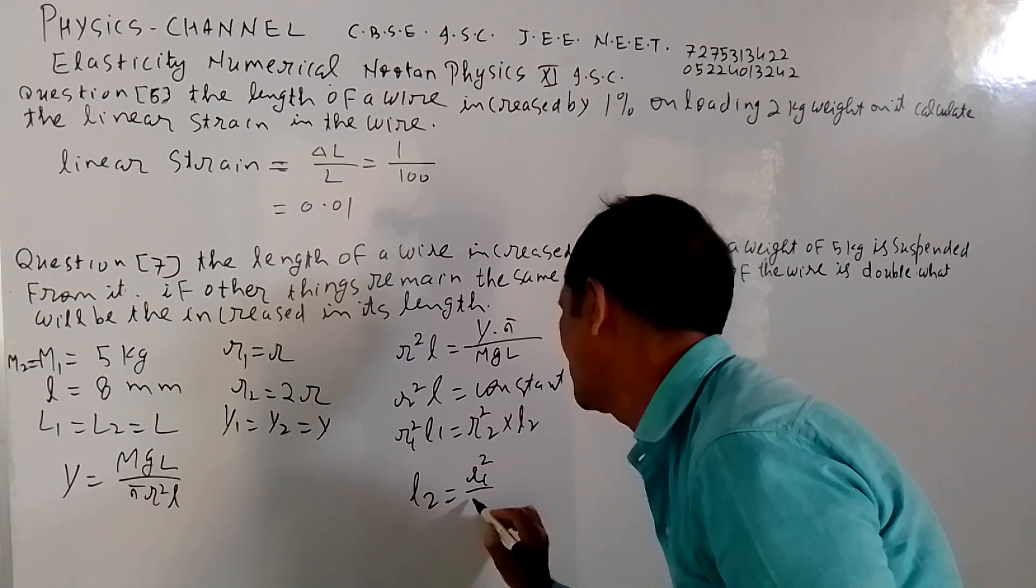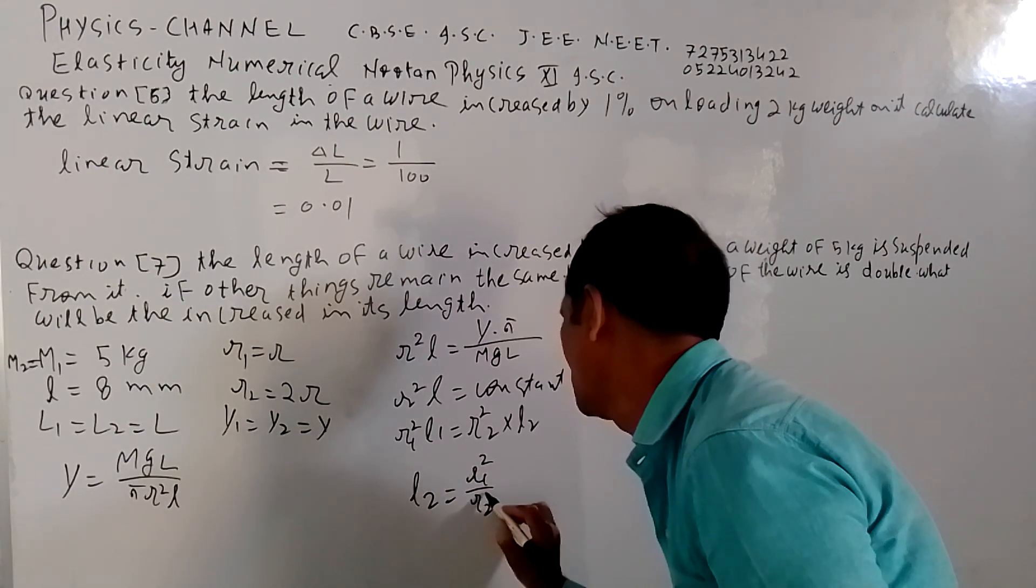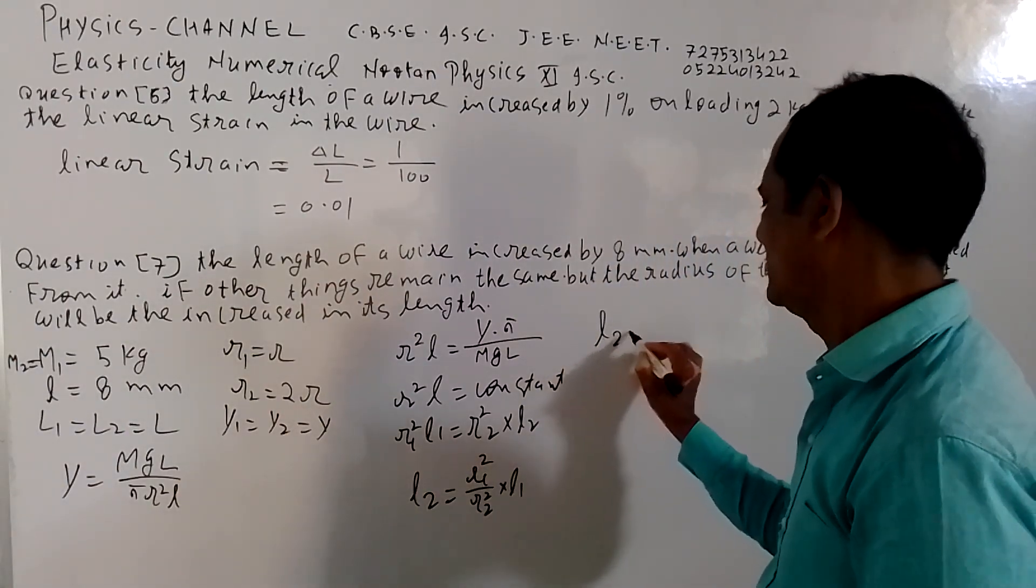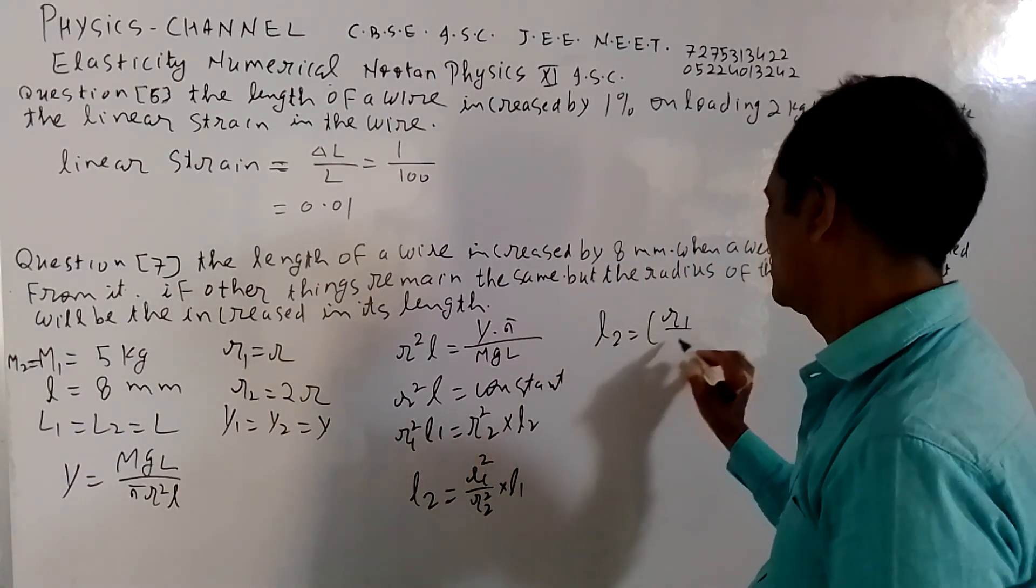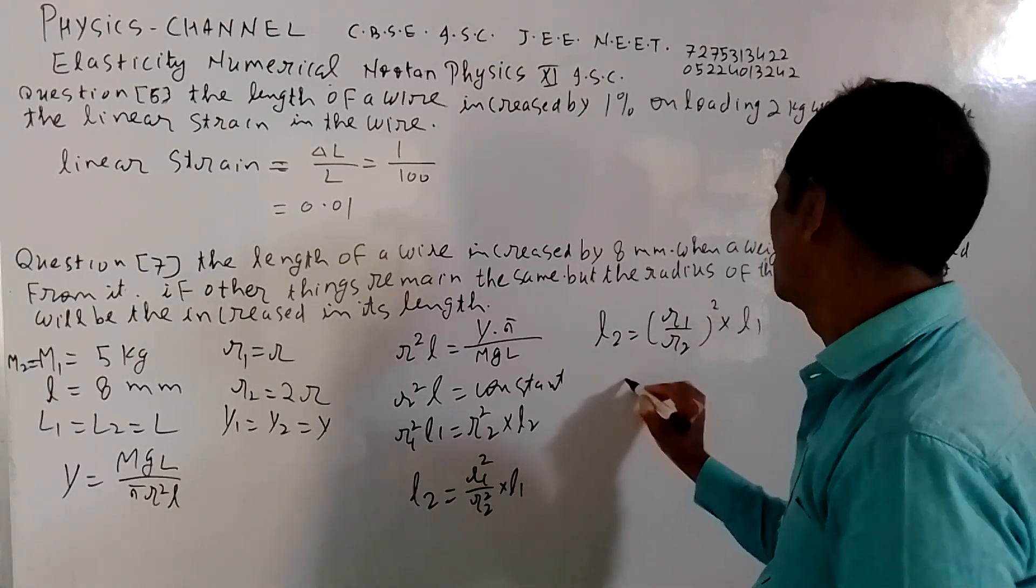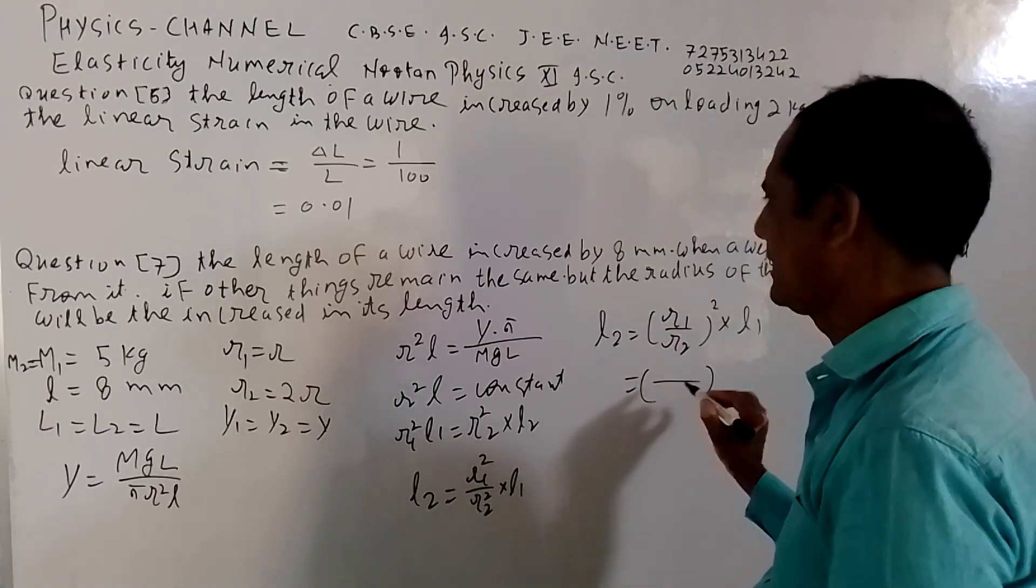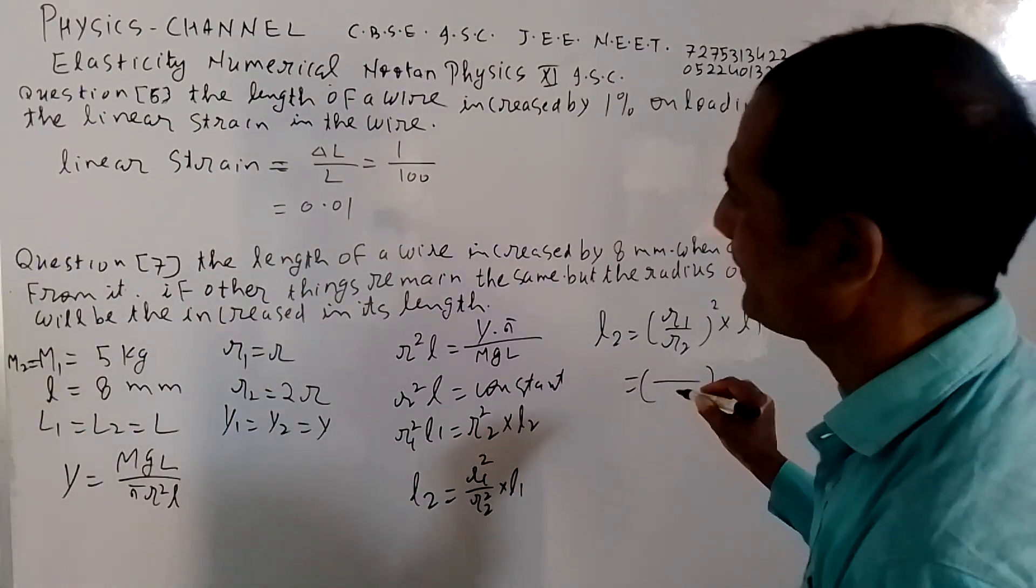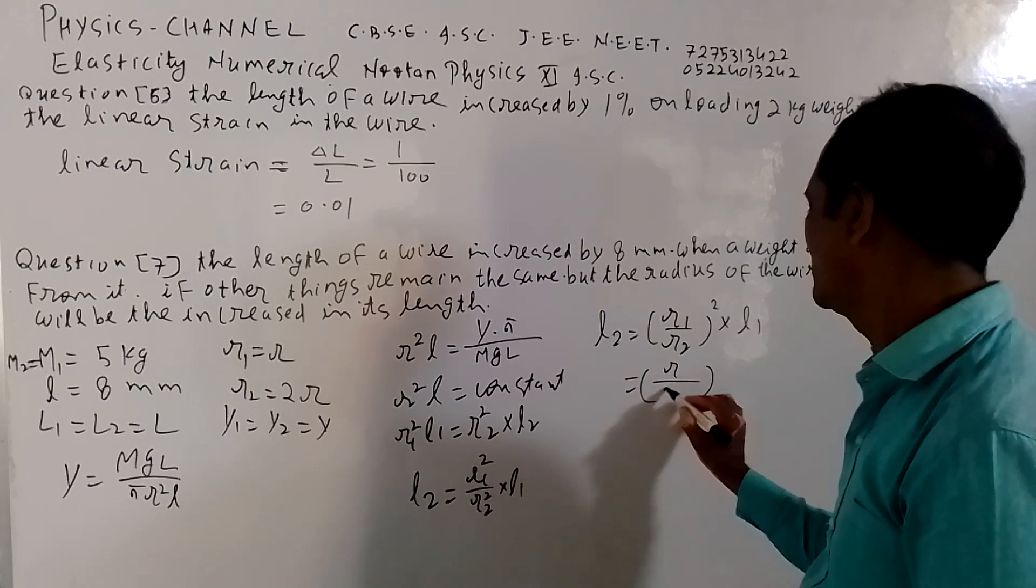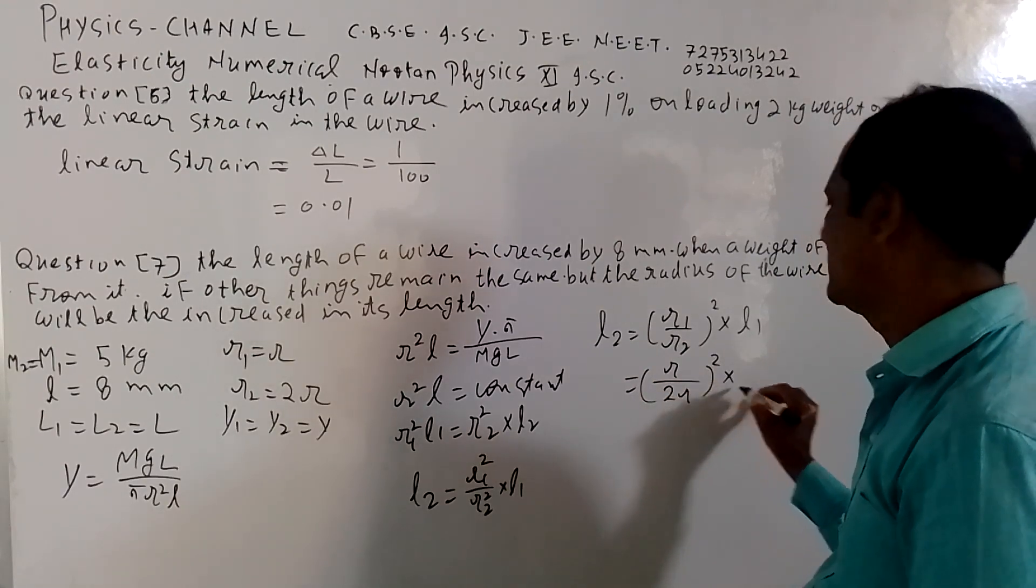L2 equals R1 upon R2 squared into L1. So L2 equals R1 upon R2 whole squared into L1.